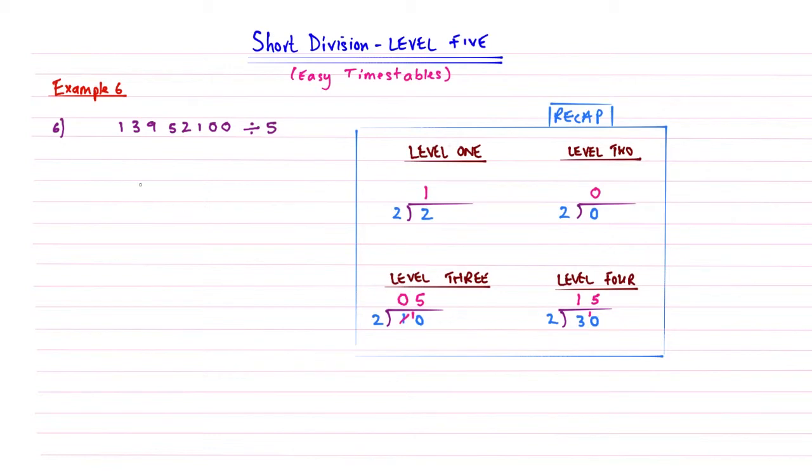Right. And so here is our final example. So example number 6. We're going to draw a big line and a curly brace now. I'm going to write these numbers underneath. So 1, 3, 9, 5, 2, 1, 0, 0. So it's very similar to our last example. But this time, we're going to divide it by 5. We're going to share this amongst 5 things. So let's go.